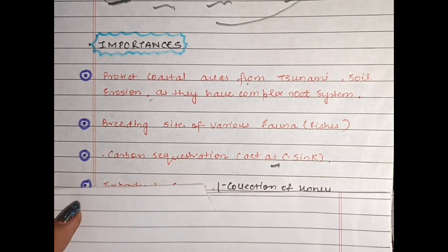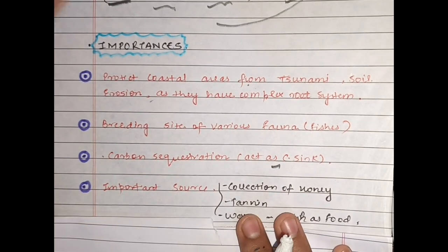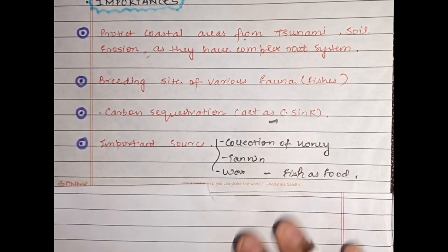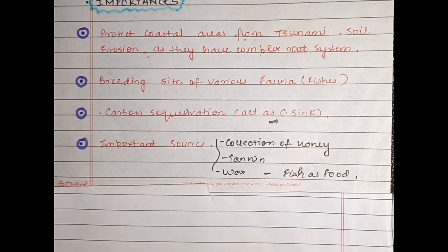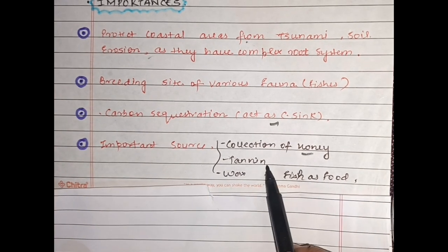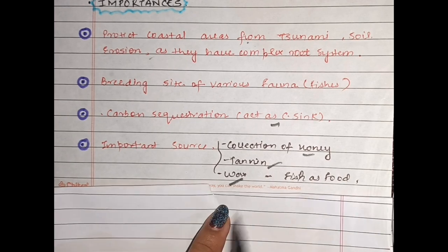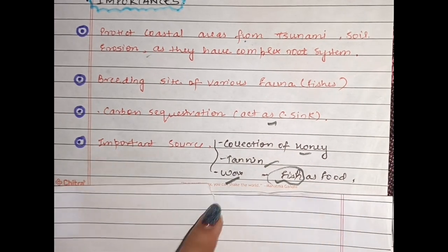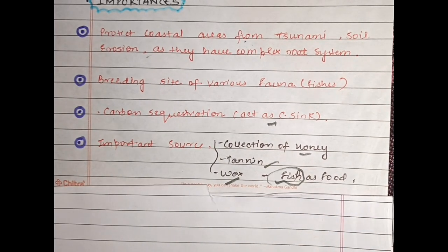The fourth importance is that mangroves are an important source for various purposes — chahe woh collection of honey ho, tannins ho, and waxes ho. And the fishes jo in regions mein hote hain unhe consume karte hain as a food. Toh yeh ek important economical importance hai mangroves ki.